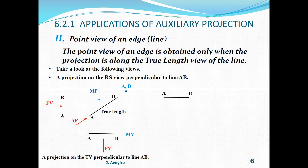Likewise, here we have line AB shown in multiple views. This time we have the left side view, the front view, and the top view. A projection perpendicular to the front view will give us the top view. Since the projection is perpendicular, the top view must be a true length.